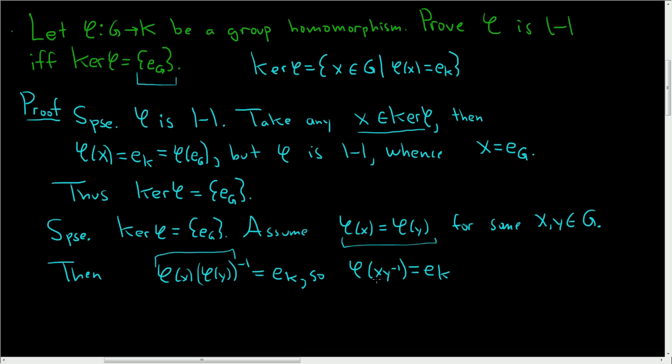This is precisely what it means for xy⁻¹ to be in the kernel. So xy⁻¹ is in the kernel of φ, which is equal to the set containing the identity element in G. So this forces xy⁻¹ to be equal to the identity element in G.